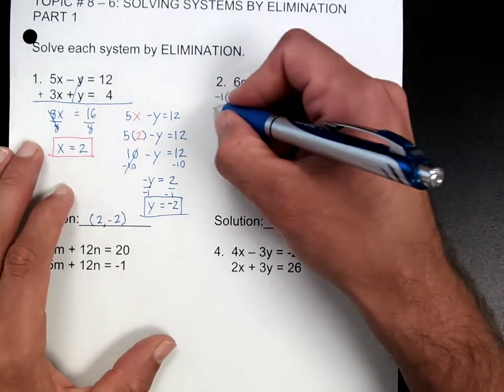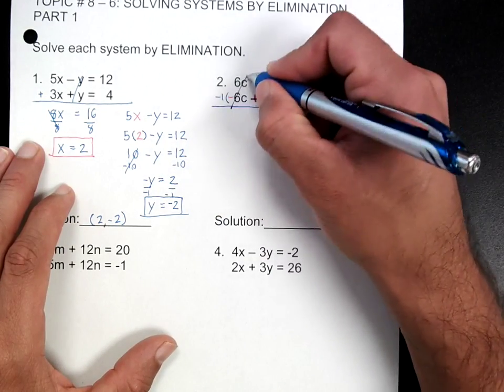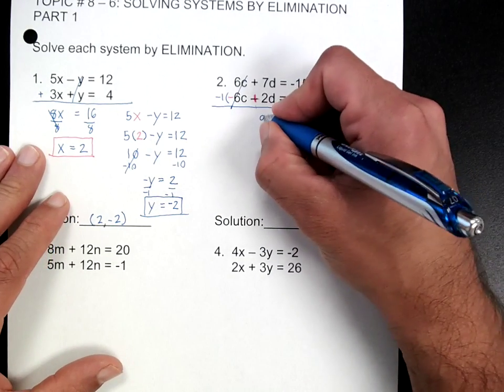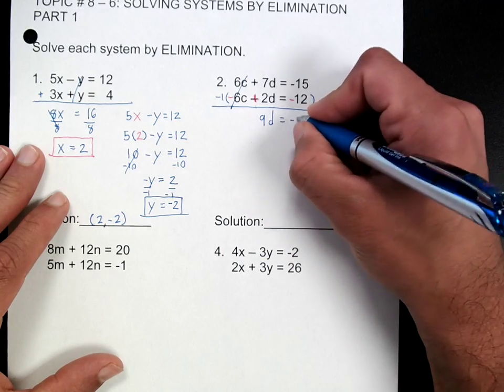I'm going to multiply by negative 1, and that's going to make this negative, this positive, and that negative. Does that make sense? Now if I add them together, that's going to cancel. That's going to be 9d, and this is going to be negative 27.